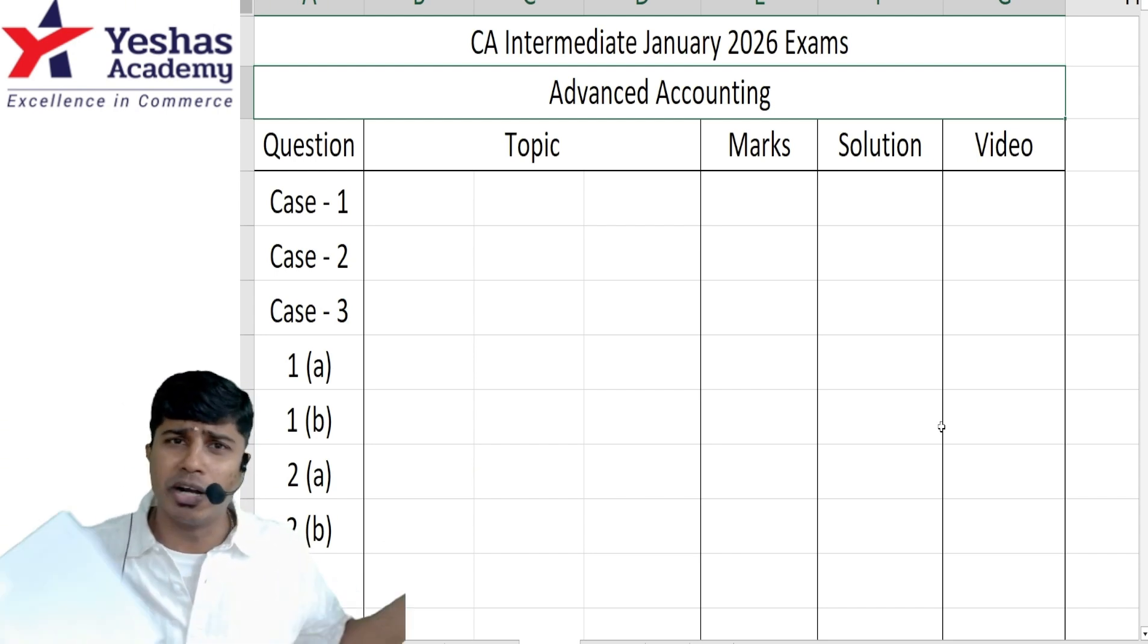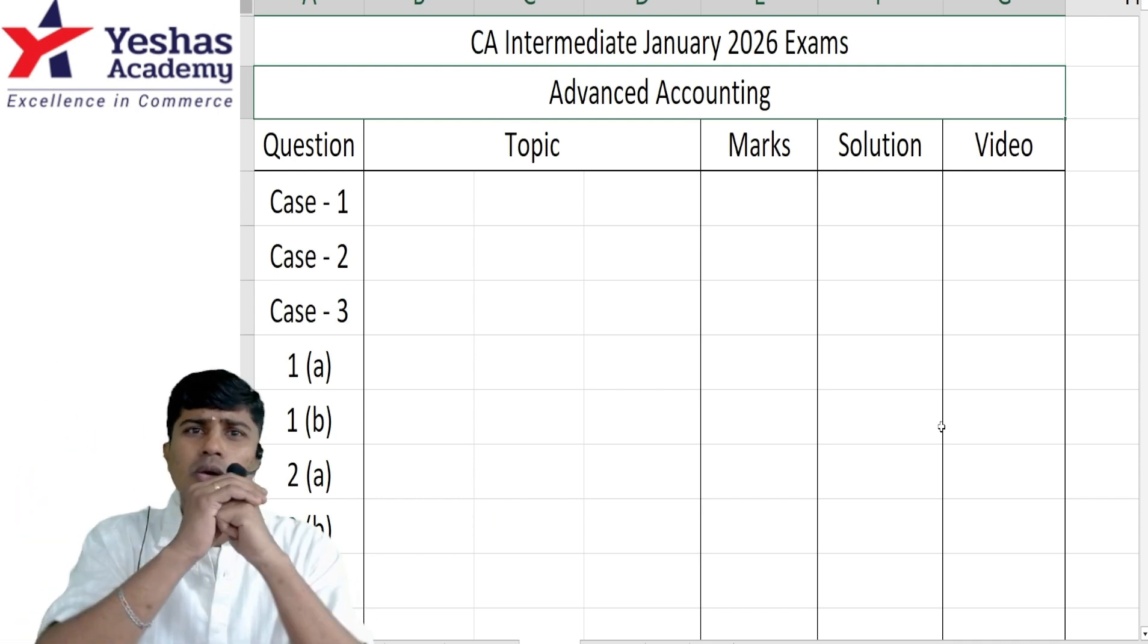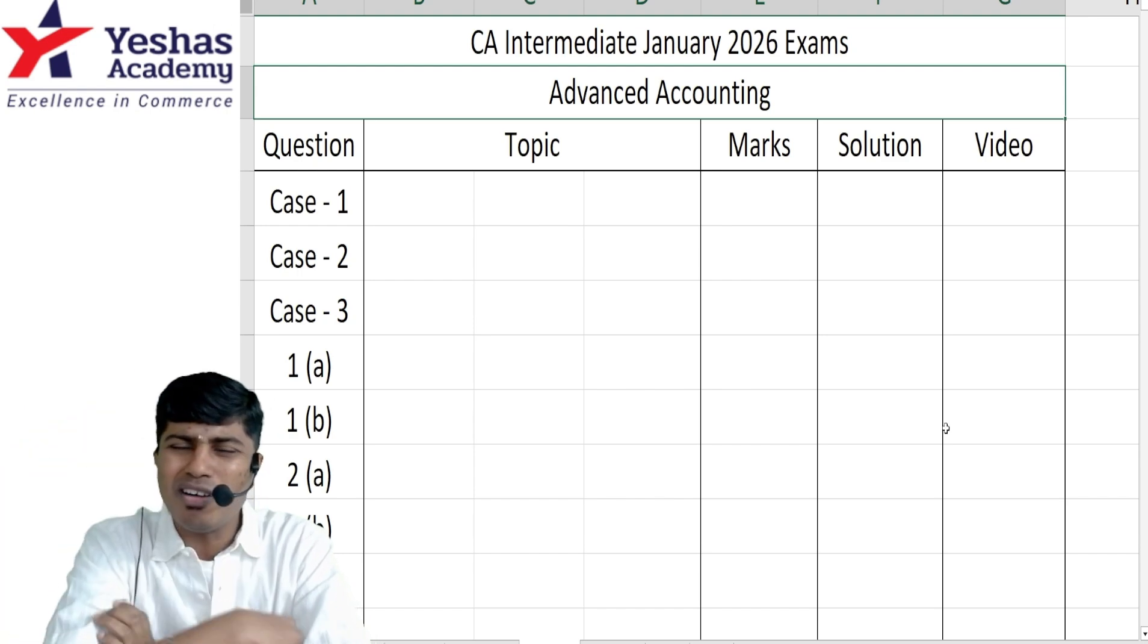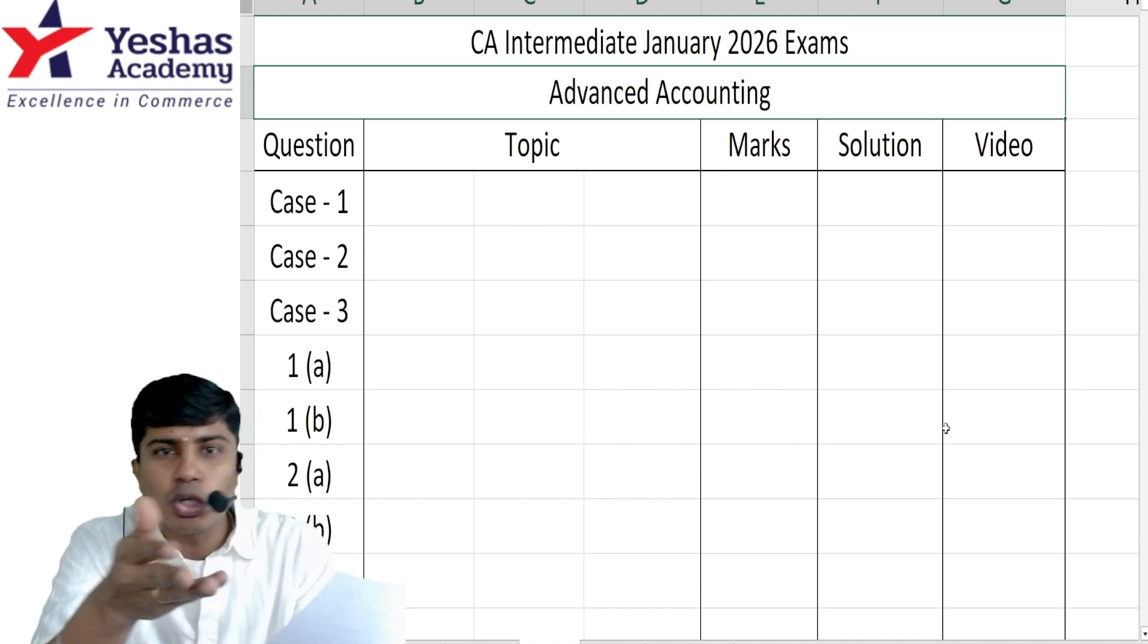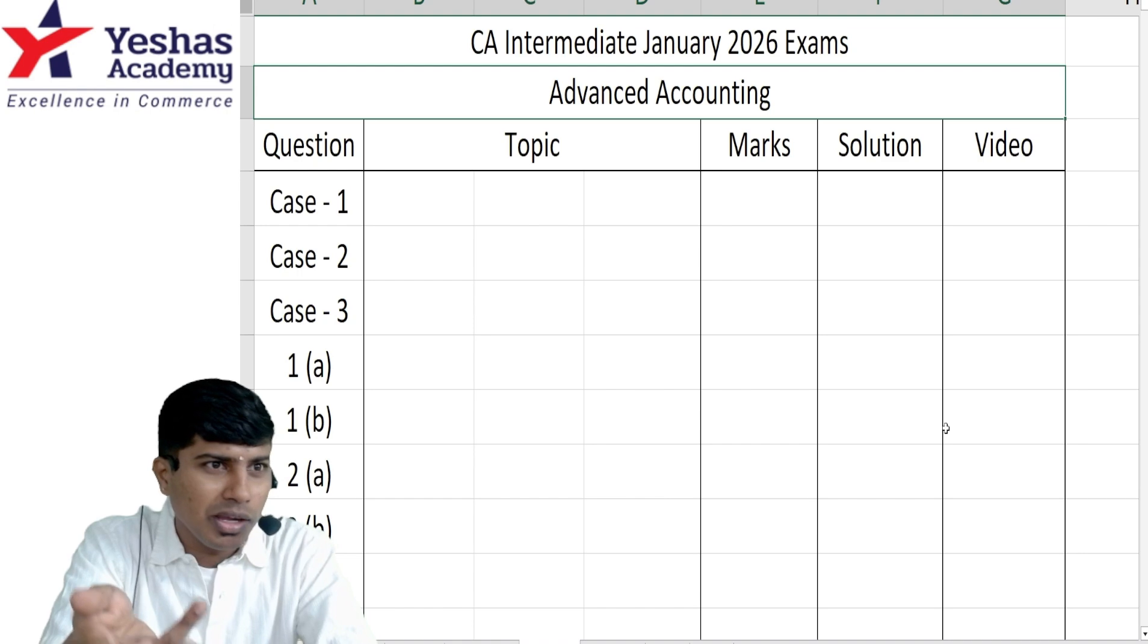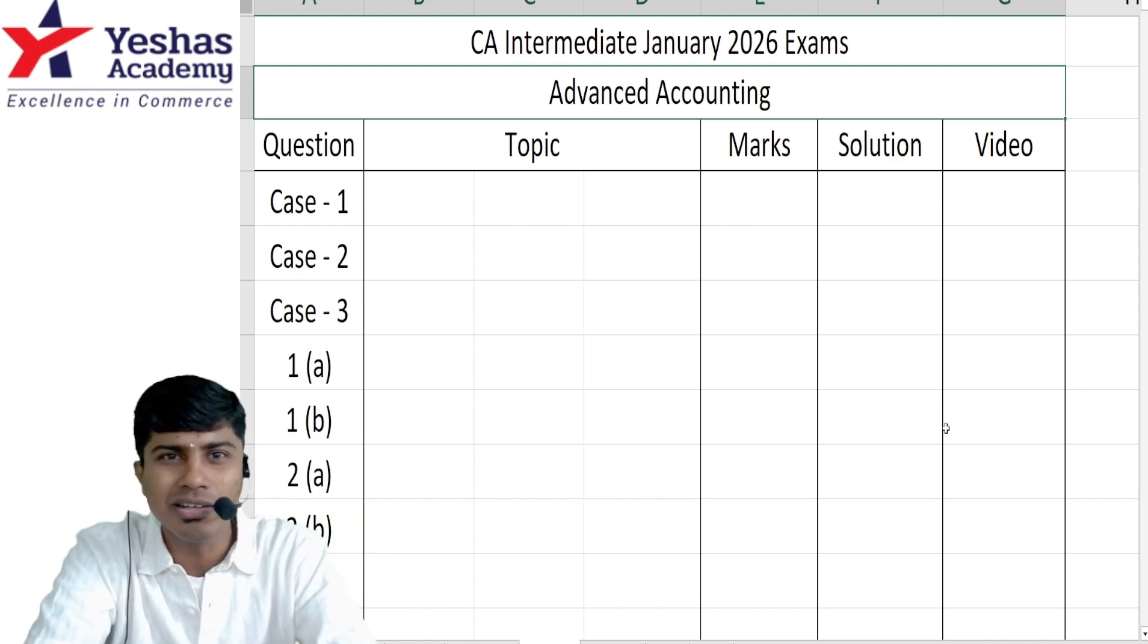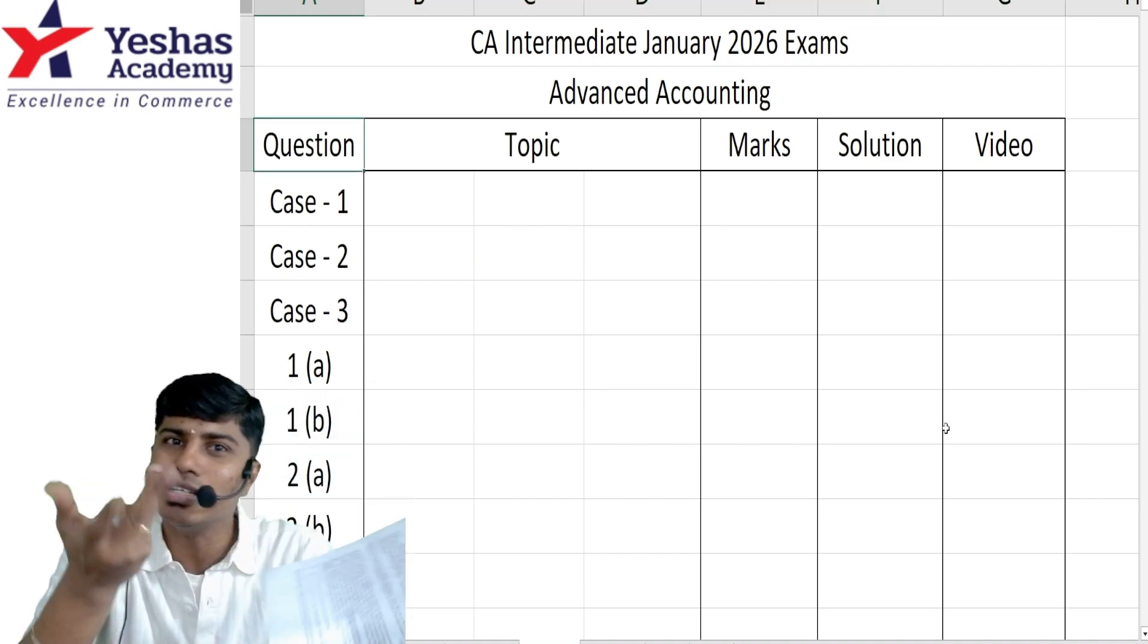But wait - what's wrong with you? What are you doing? You came to watch the discussion video for the Jan 26 examination. Your accounts paper is over now. If I tell you case scenario one answer is A or B, how is it going to impact anything? Is there a time machine where you can go back and change the answer? There's nothing you can do about it. Why are you wasting your time listening to some idiot discussing the answers?